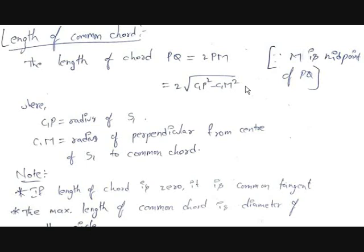There is an important point to remember: if the length of the chord is 0, it means the points of intersection coincide, so the common chord becomes a common tangent. Also, the maximum length of the common chord is the diameter of the smaller circle. That's all for today's video. I hope you enjoyed it — if not, comment below why. If you have any doubts, comment below and I'll answer them in the next video.